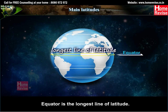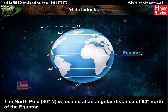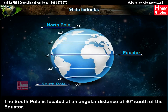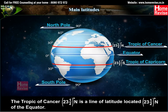Main latitudes: The equator is the longest line of latitude, representing zero degrees. The North Pole, at 90 degrees north, is located at an angular distance of 90 degrees north of the equator. The South Pole is located at an angular distance of 90 degrees south of the equator. The Tropic of Capricorn (23.5 degrees south) is a line of latitude located 23.5 degrees south of the equator. The Tropic of Cancer (23.5 degrees north) is located 23.5 degrees north of the equator.